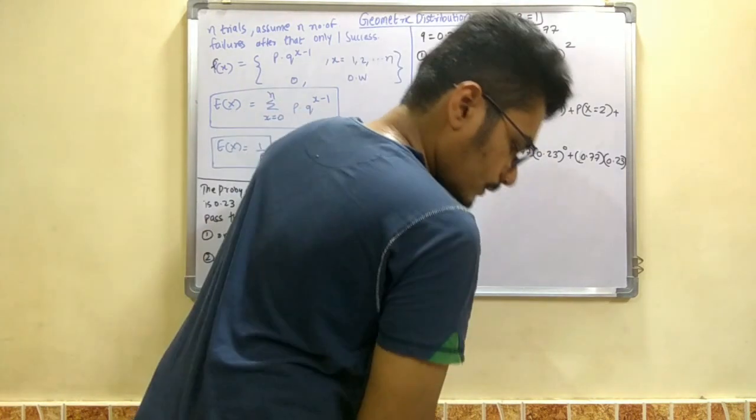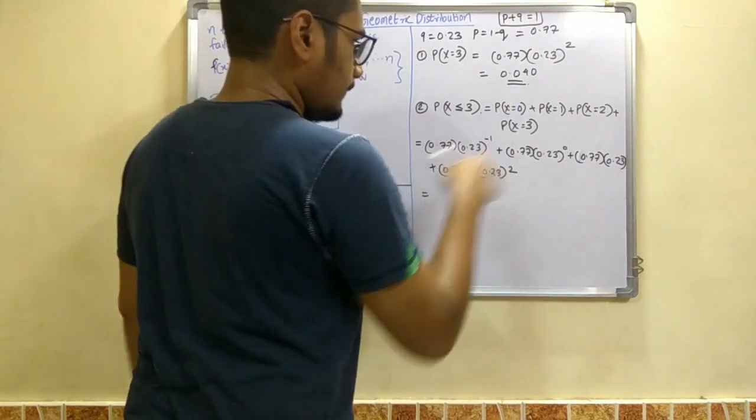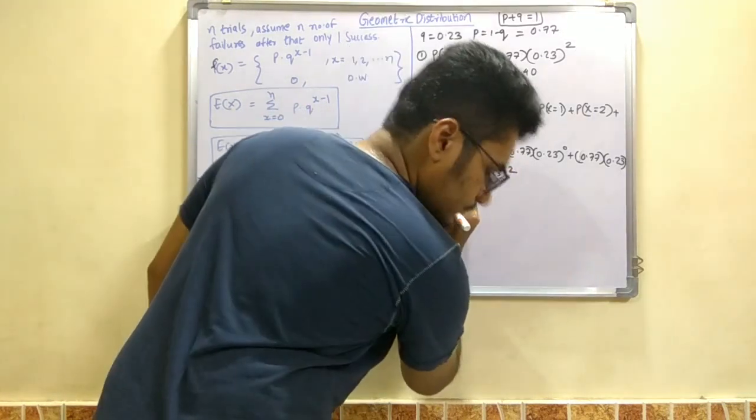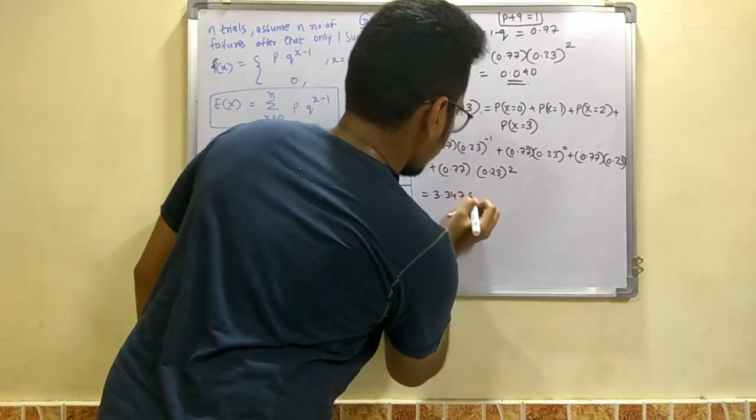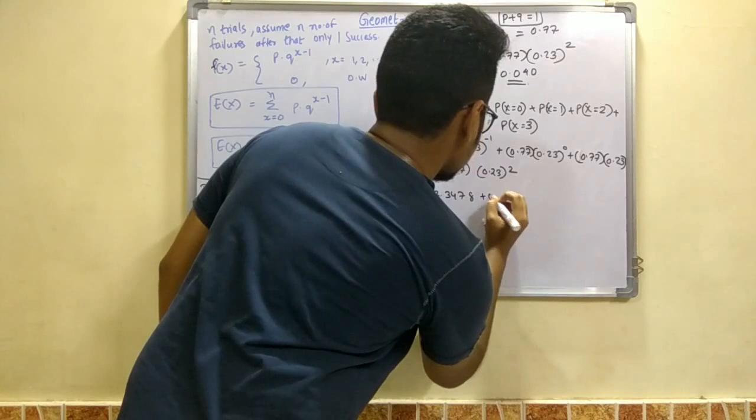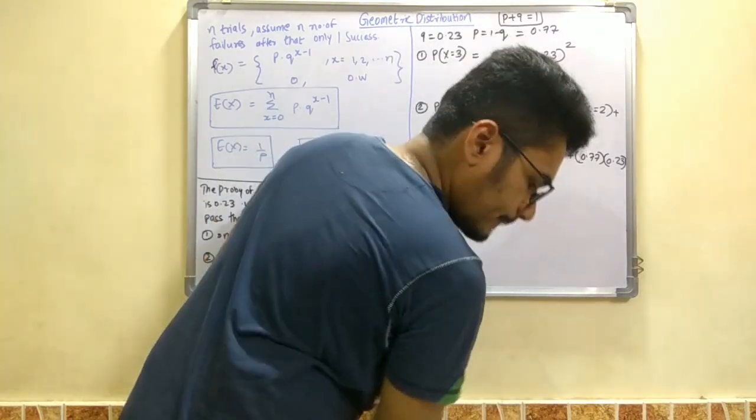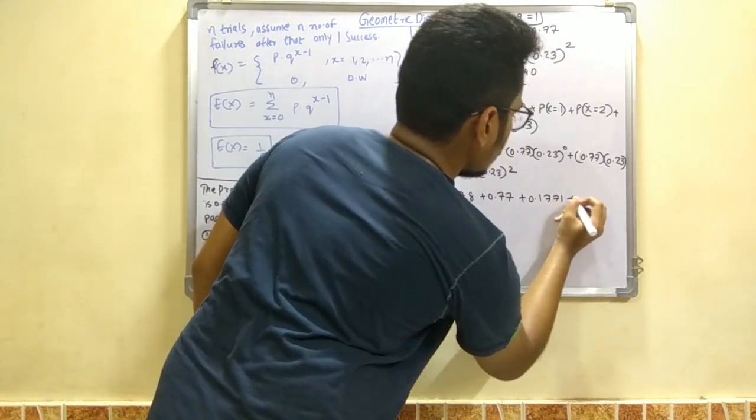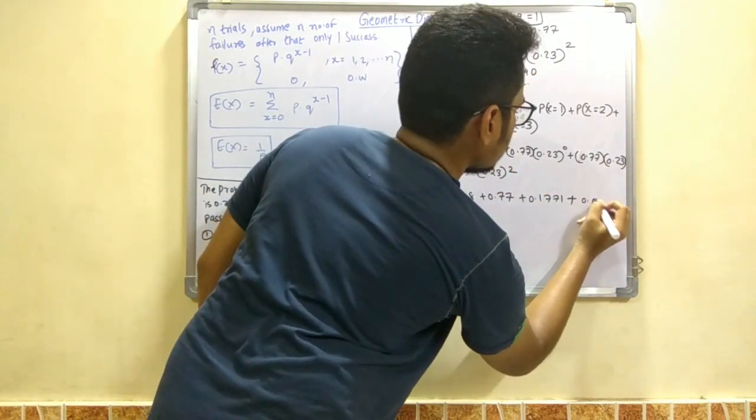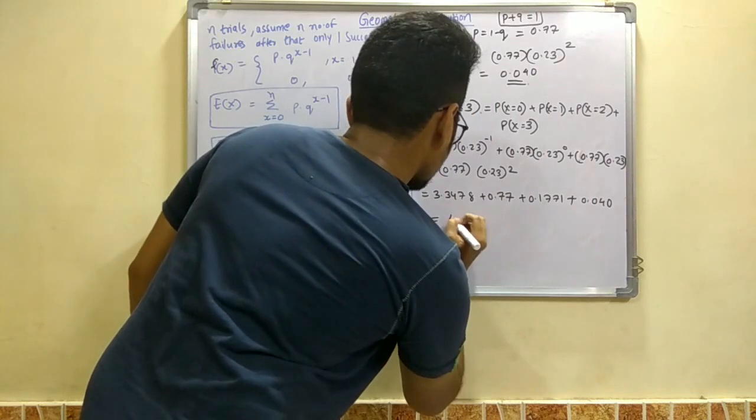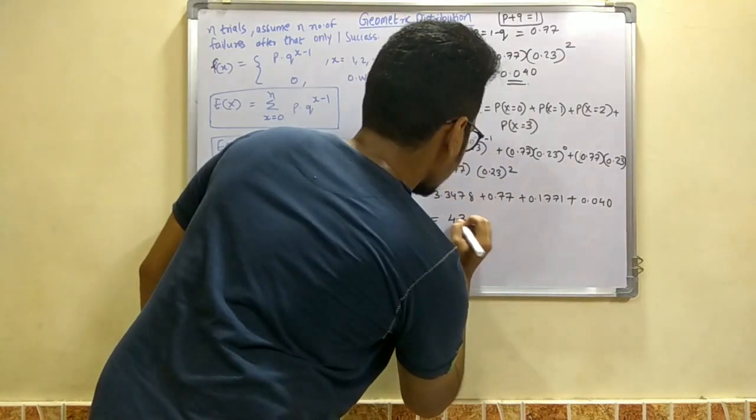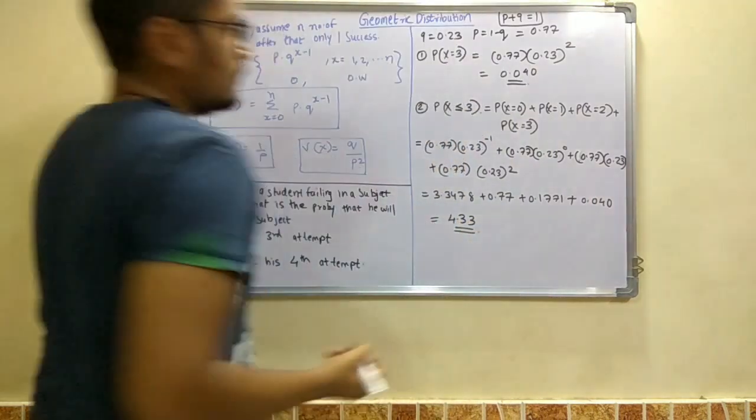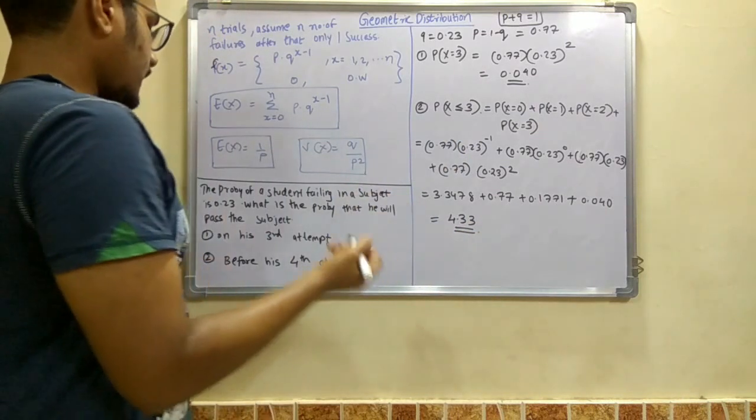And so after this, individual values are calculated. And so the very first value is 3.3478, next is 0.77, next is 0.1771, and finally this value, that is 0.040. And you add it and you get the answer as 4.33. So this is the probability that he will, with this probability he will pass that subject before his fourth attempt.